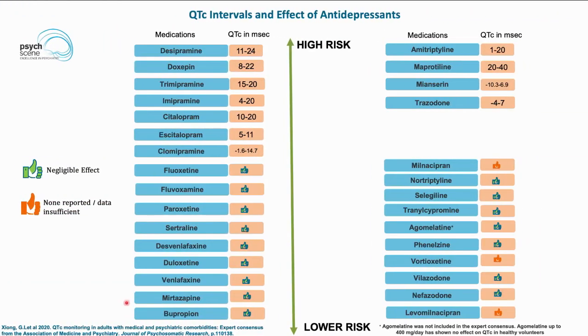The risk of depression and its consequences also need to be taken into account in management decisions. Safer antidepressants at the lower end of the QTc risk spectrum include mirtazapine, bupropion, and venlafaxine. Newer medications such as vortioxetine, vilazodone, nefazodone, agomelatine, and levomilnacipran are also considered safer from a QTc interval perspective.